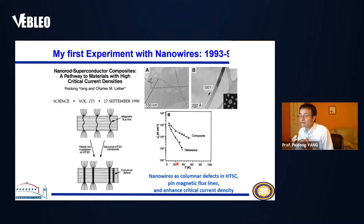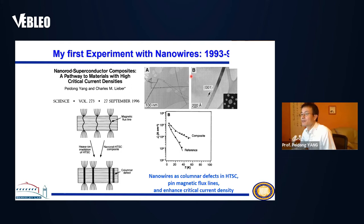My own first experiment started with my PhD research with Professor Charles Lieber at Harvard. Back then we wanted to make one-dimensional inorganic nanostructures to be incorporated into high-temperature superconductors to do flux line pinning and enhance the critical current density. We came up with a method to grow inorganic nanowires embedded into the superconductor, and these composite materials showed enhanced critical current density—meaning you can carry electricity without energy loss. This is essentially the beginning of many of the inorganic and semiconductor nanowire efforts, started in the early 90s.